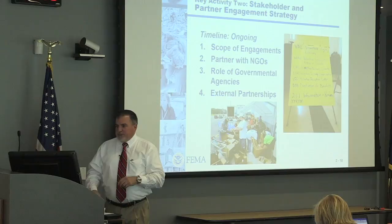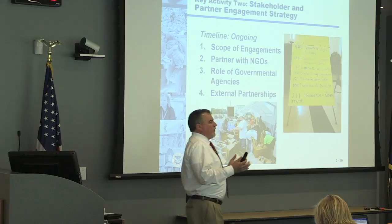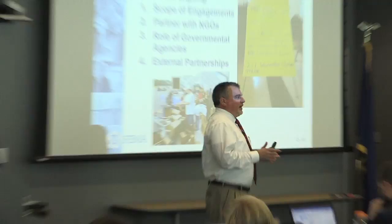As we get into Activity 2 — stakeholder and partner engagements — that's basically how we expand from your core planning team. You want to manage that core planning group; you don't want to get too out of control and have 40 or 50 people as part of it. Your core planning team of key stakeholders will vary by your municipality, who you have on staff, based on size, and the characteristics of your community.